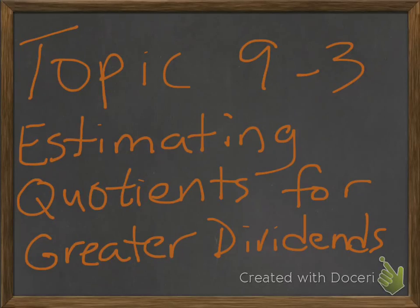Topic 9 Lesson 3: Estimating Quotients for Greater Dividends. So far you know how to use place value to multiply multiples of 10 and 100. In this lesson you will learn how to estimate the answers to division problems by using multiples of 10 and 100.